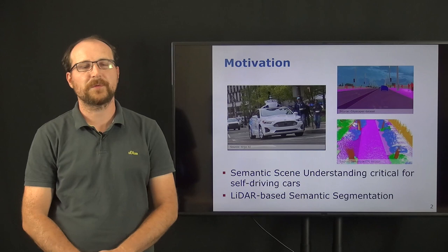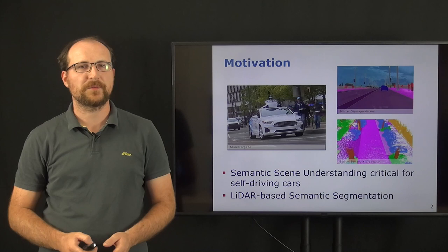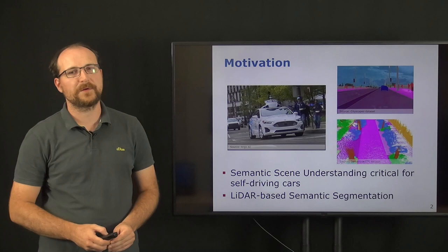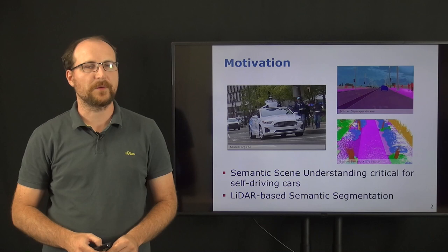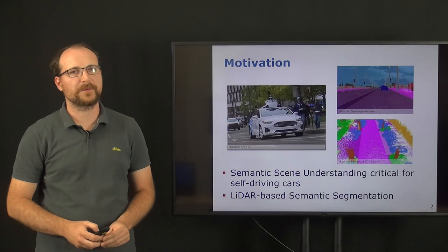This information is particularly interesting for self-driving cars as it distinguishes between different types of road surfaces like road, pedestrian areas, but also parking lots. It furthermore provides the car with information about the extents of objects, like for cars, pedestrians and cyclists.